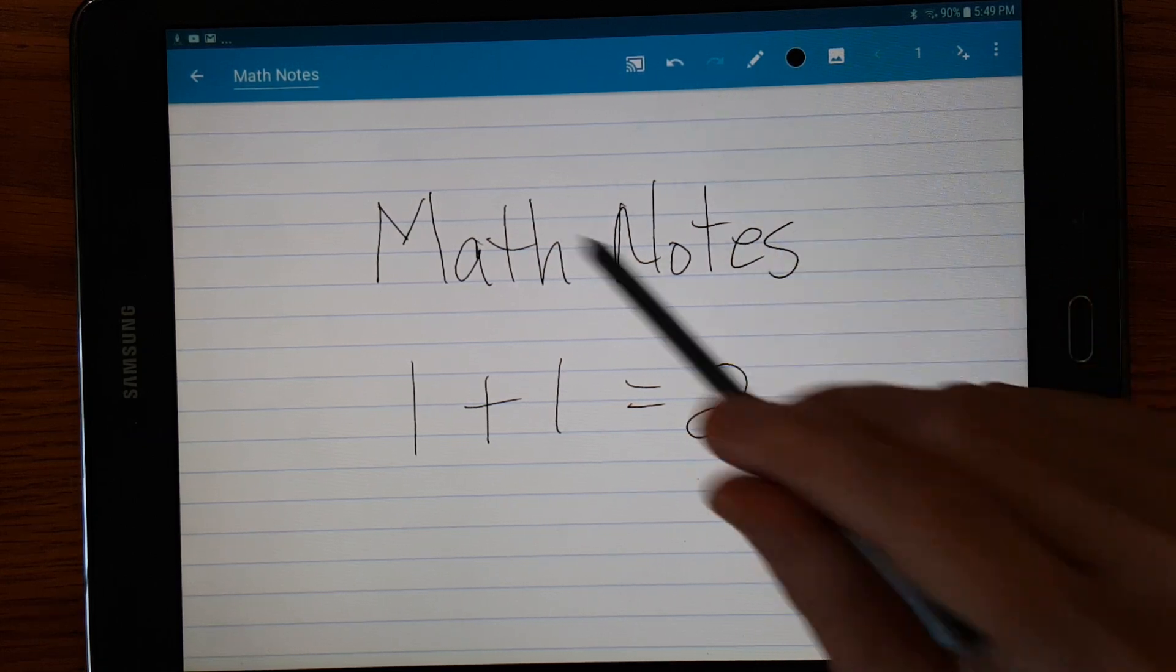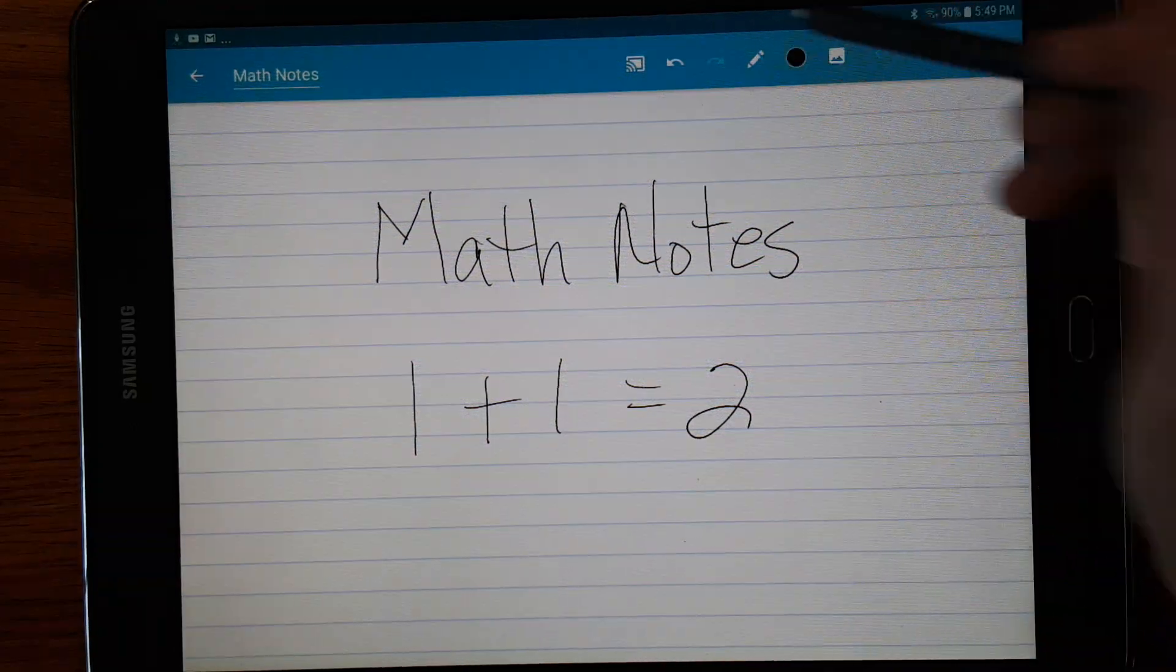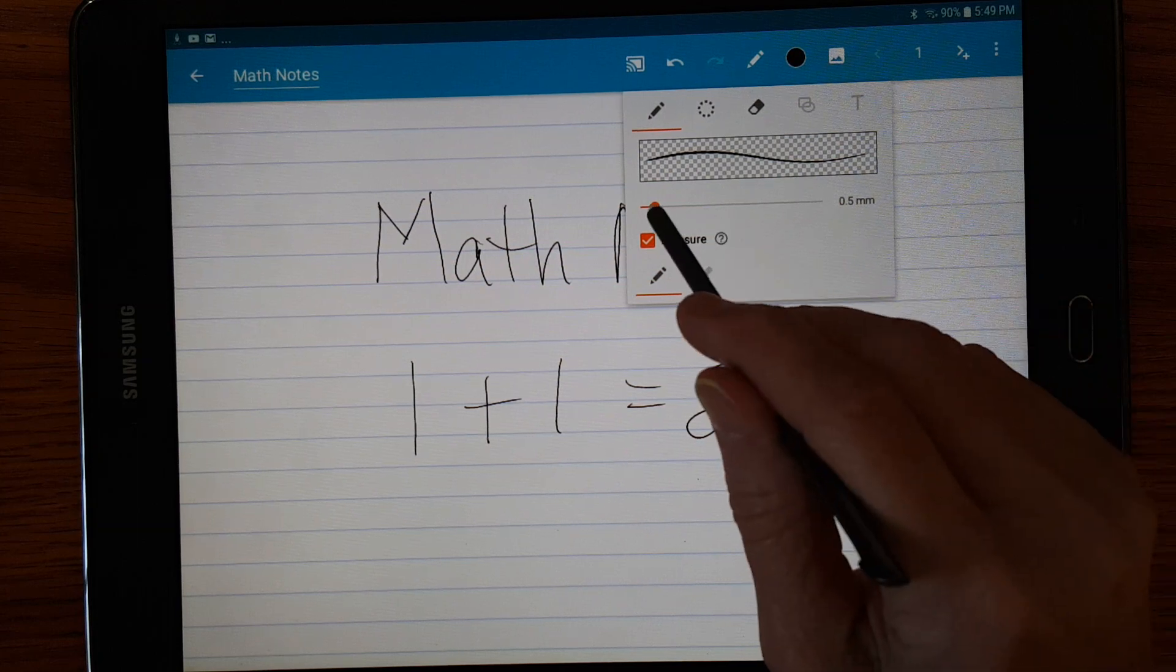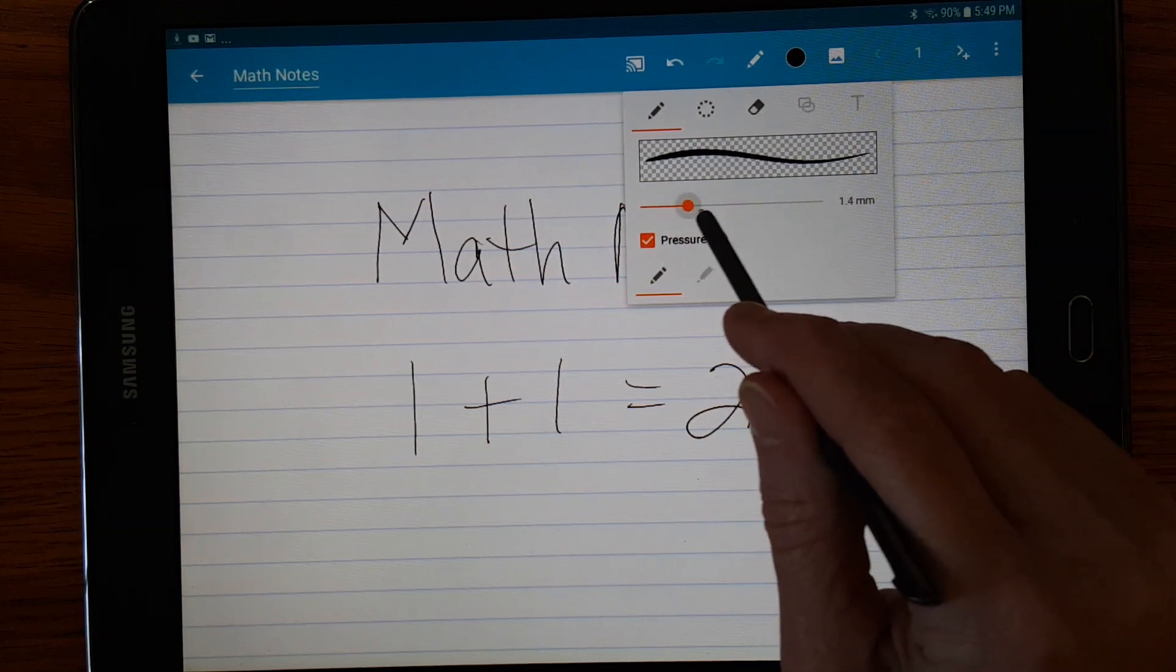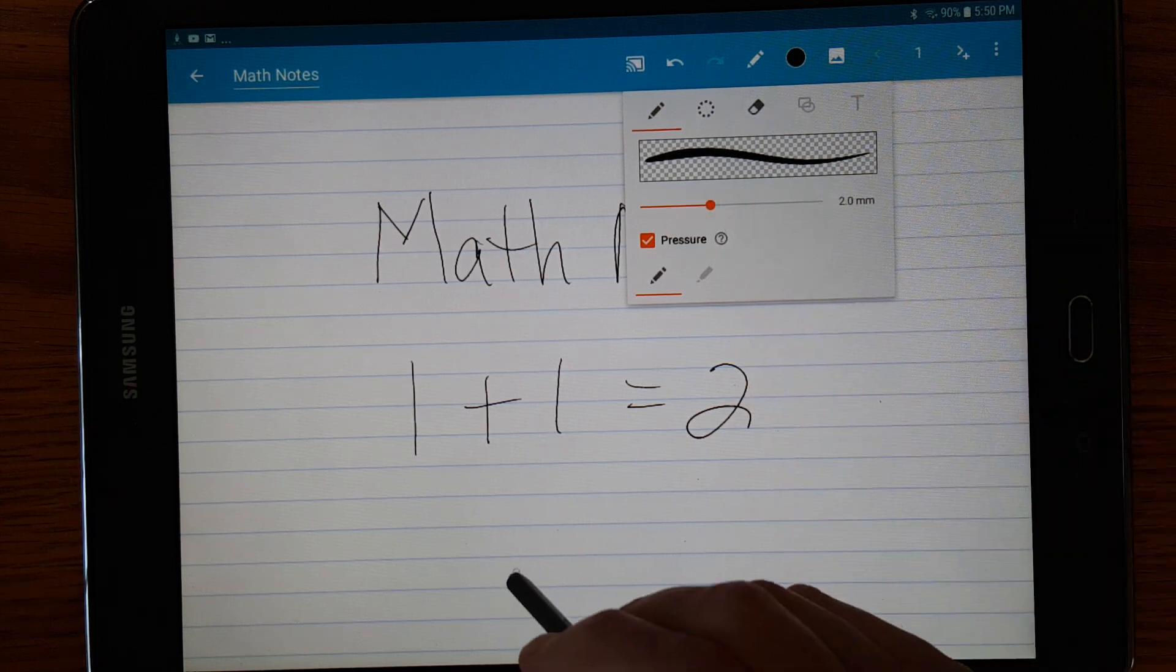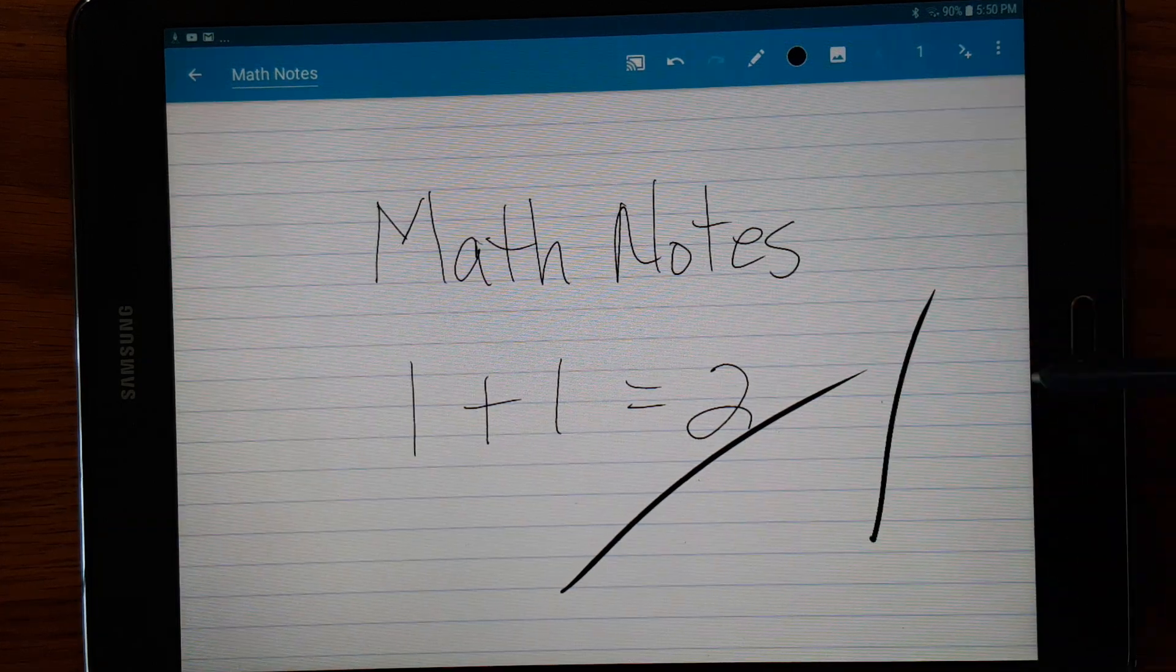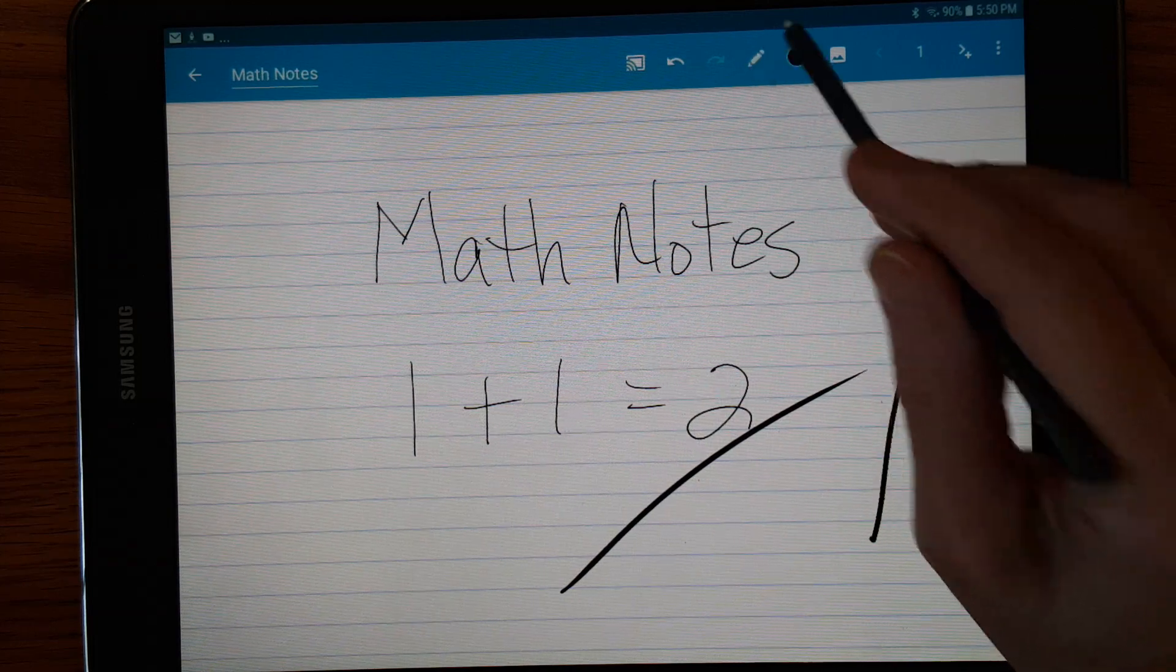S notes does have the undo and redo up in the menu. The pen is pressure sensitive and you have very granular control of the line width. Let's test this. So you can see how the pressure sensitivity works. That works really well.